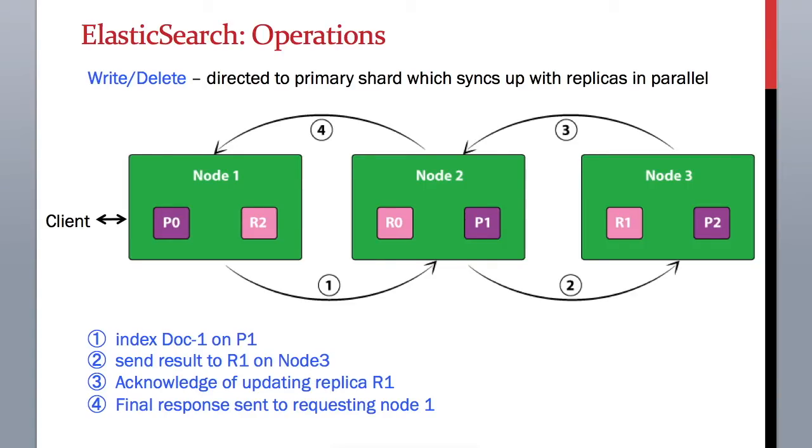In this case, it's R1 on node 3. If replica mode is set for synchronization acknowledgement, then node 2 will wait for node 3 to send an acknowledgement that the replica R1 is updated successfully. Once node 2 receives the response, it will send acknowledgement back to node 1 saying the whole operation is complete.